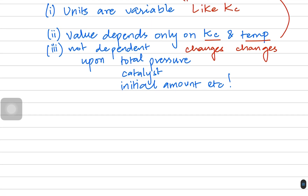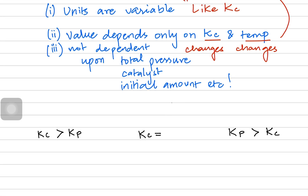The final important point is the relationship between Kc and Kp. When we relate them, there are three possibilities: Kc can be bigger than Kp, Kp can be bigger than Kc, or Kc and Kp can be equal.